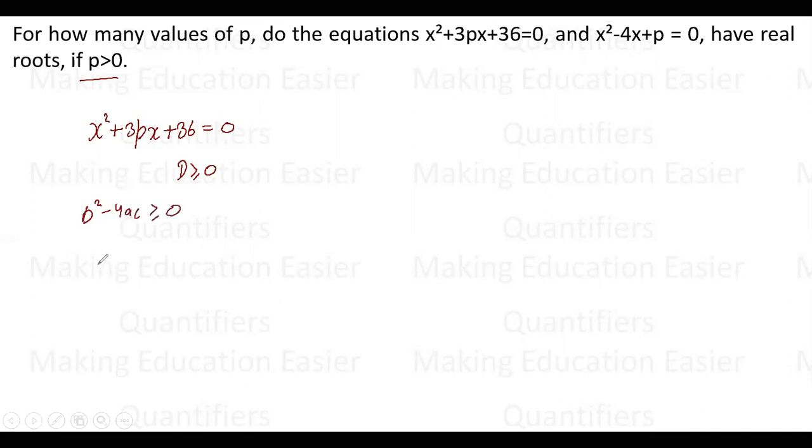Now what is the value of b? 3p. 3p squared is 9p² minus 4 into a is 1 and c is 36, greater than or equal to 0. So 9p² - 144 is greater than or equal to 0, so that is (3p + 12)(3p - 12) using a² - b².